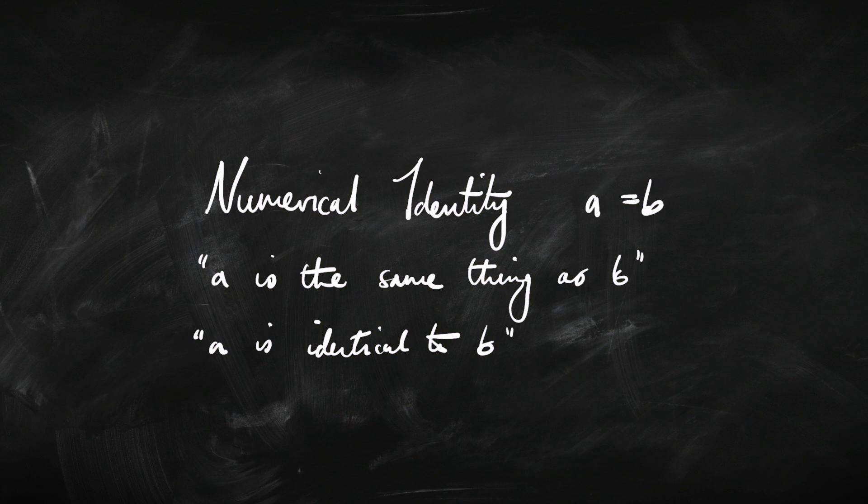Whenever we're talking about identity in logic, we're talking about numerical identity, meaning this thing is the same thing as this thing — A is the same thing, the same person, as B. It's called numerical identity because it relates to how many of something there are. If we're thinking about how many students are there in the class or how many people are watching this video right now — the number of students, the number of people, how many there are — that's the sense of identity we're talking about.